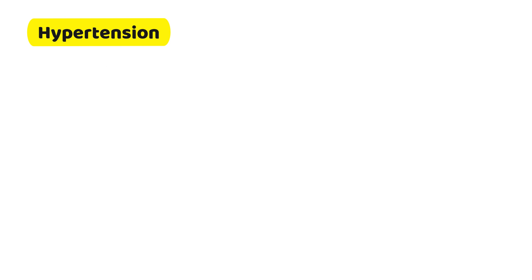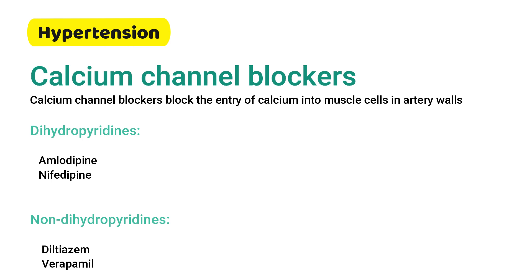Calcium channel blockers block the entry of calcium into the muscle cells in the artery walls. These include dihydropyridines and non-dihydropyridines.